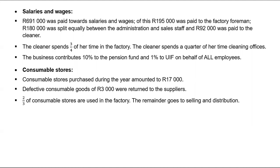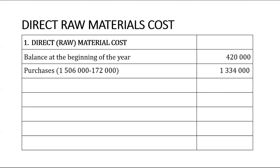We have a couple of things missing. They didn't give us any transportation cost for transporting raw materials from the supplier to the business — what we normally call carriage inwards — so that will be zero. We also do not have custom duties; those are taxes on goods imported from overseas. Since there are no overseas raw material purchases, custom duty will also be zero.